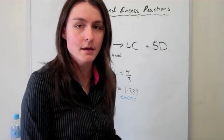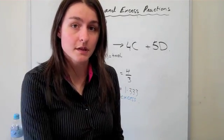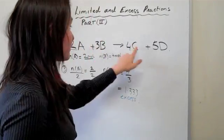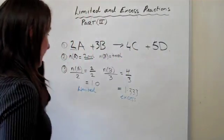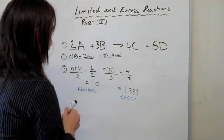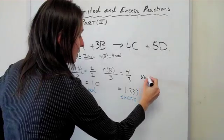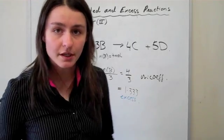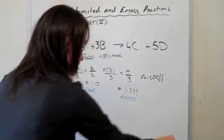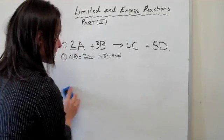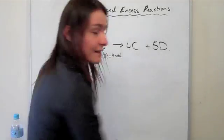So really A is going to determine the extent of the reaction or determine the moles of C and D produced. So what we do is once we've done the n/coef ratios, this is n/coef, once we do that we don't need that information anymore. So I suggest that you just forget about this information, it was just a tool to help us work out which one is limited and which one is excess.